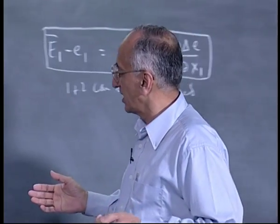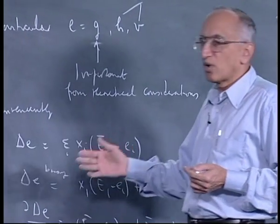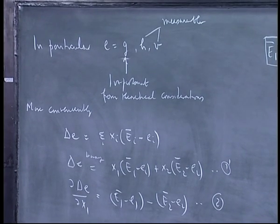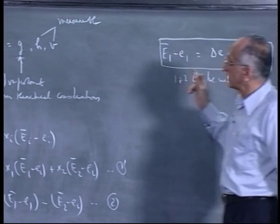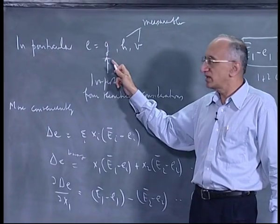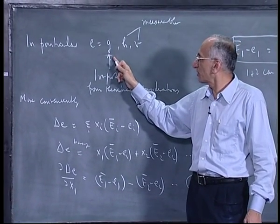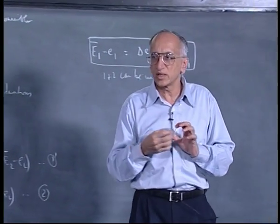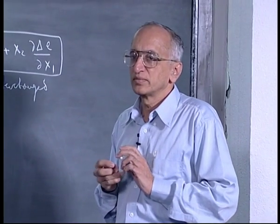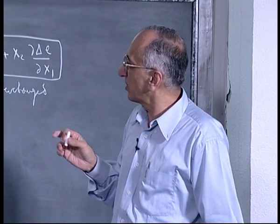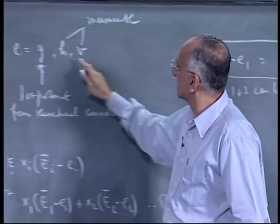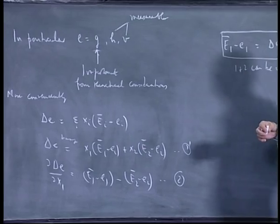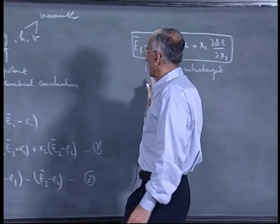The theory applies to all partial molar properties. I am deriving it in general for an arbitrary partial molar property. Three quantities are of primary importance: delta G, because it gives the chemical potential as a function of composition; delta H and delta V, because they govern the temperature and pressure dependence of the chemical potential. Volume is explicitly measurable, and enthalpy change is also measurable.